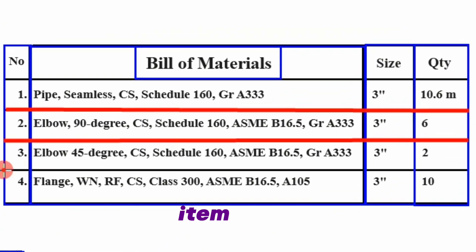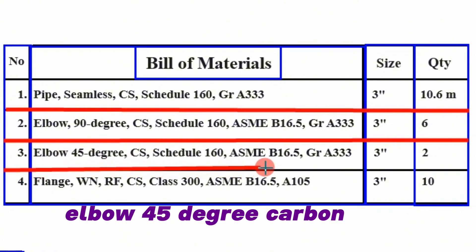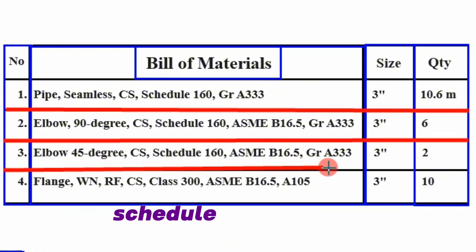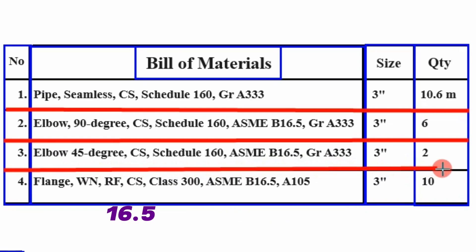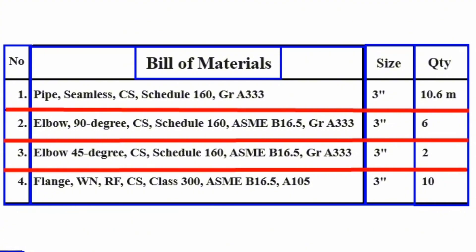Item number 3: Elbow, 45 degree, carbon steel, schedule 160, ASME B16.5, grade A333, size 3 inch, quantity 2 pieces.